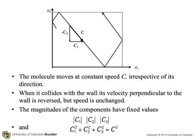The magnitudes of the components have fixed values, C1, C2, and C3. By the way, it is typical to use the term C for speed or velocity of a molecule. At the macroscopic level, we usually use the term u or v for speed or velocity, and we talk about the velocity components, u sub x, u sub y, u sub z, etc.